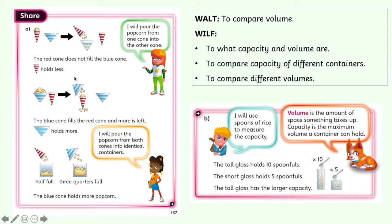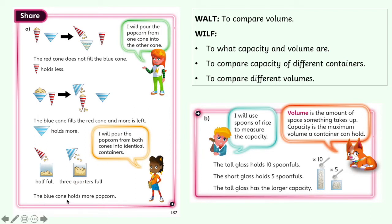Or we could have done this the other way around — taken all of the popcorn that was in the blue cone, tried to pour it into the red, and we would have seen it overflowed. So there must be more in the blue cone than the red cone can hold. Now the last way, and we've got Flo suggesting this: she said she will pour the popcorn from both cones into identical — which means exactly the same — containers. She's poured her red one into here and her blue one into here. You can see that this container is only half full, whereas this container is three quarters full. So we've found out the same thing: the red cone has a smaller capacity — there's less in it than the blue cone. The blue cone holds more popcorn.